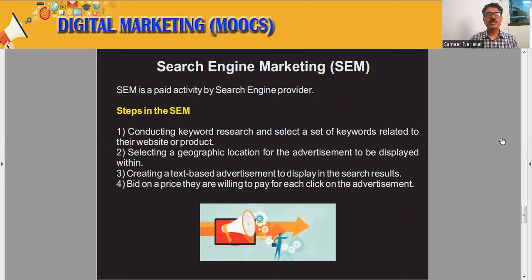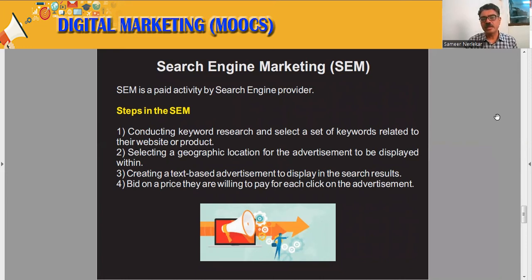Search engine marketing is a paid activity by search engine providers. For example, when you use a search engine like Google, you will find some paid content or paid advertisements — that is called search engine marketing. The steps involved are: conducting keyword research and selecting keywords related to the website or product; selecting a geographic location for the advertisement to be displayed; creating a text-based advertisement to display in search results; and bidding or negotiating a price they are willing to pay for each click on the advertisement.